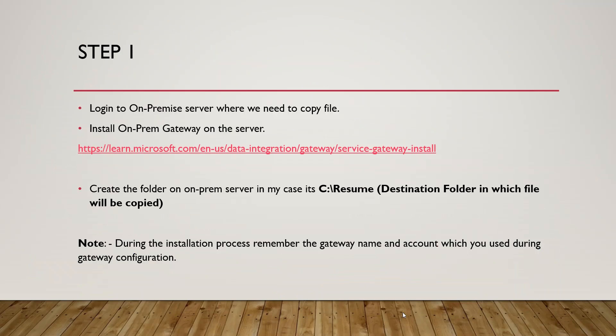Step one: log in to the on-premise server where you need to copy the file. Then install the on-premise data gateway on the server — a link below will help with installation. After this, create a destination folder on your on-premise server; in my case it's C:\resume.